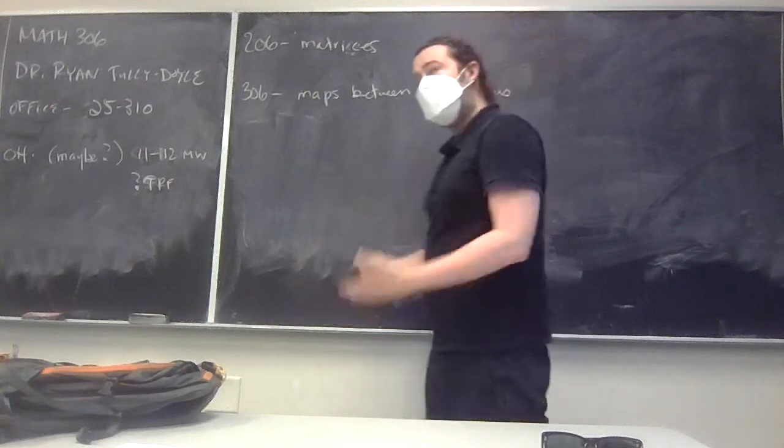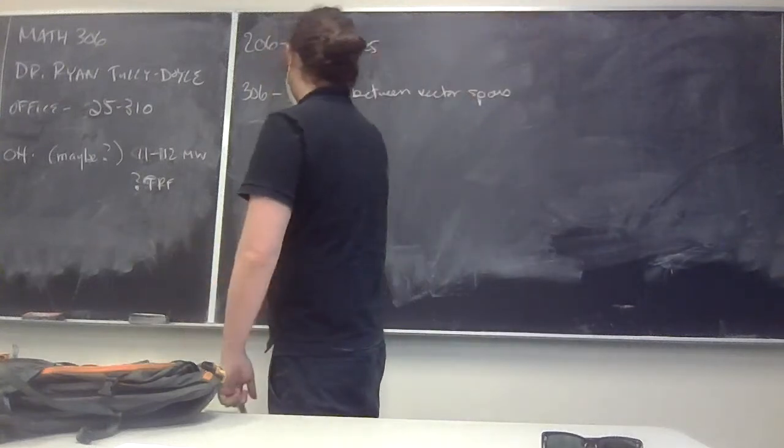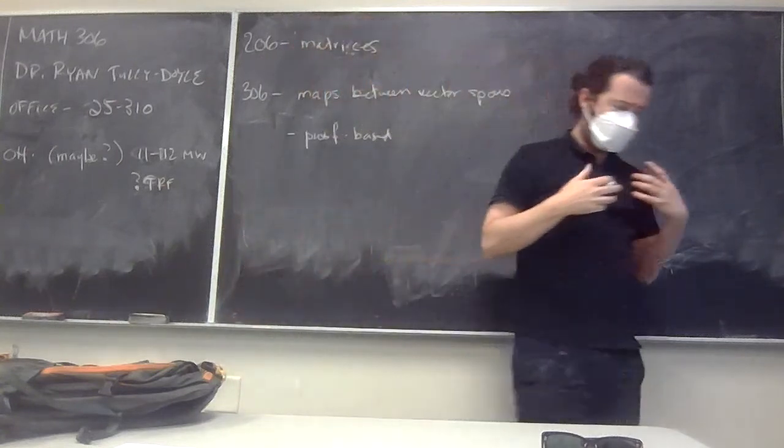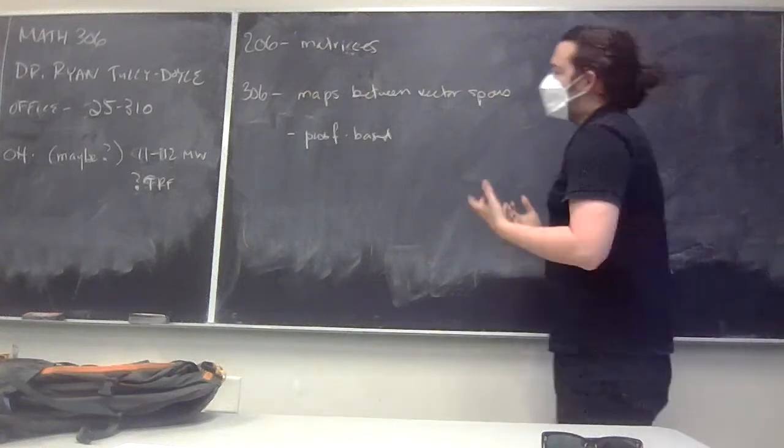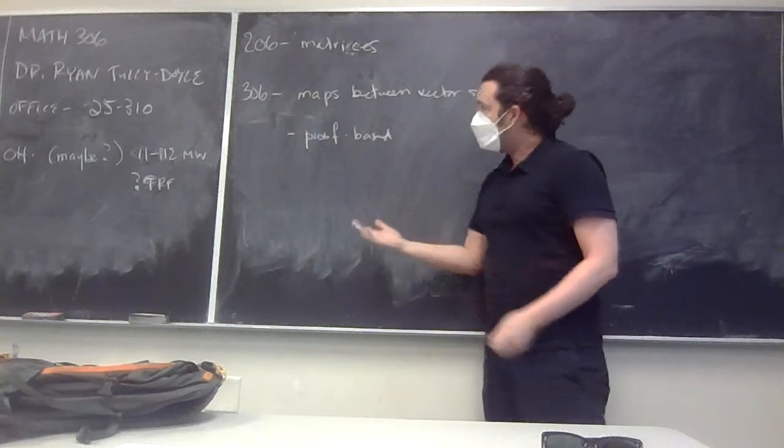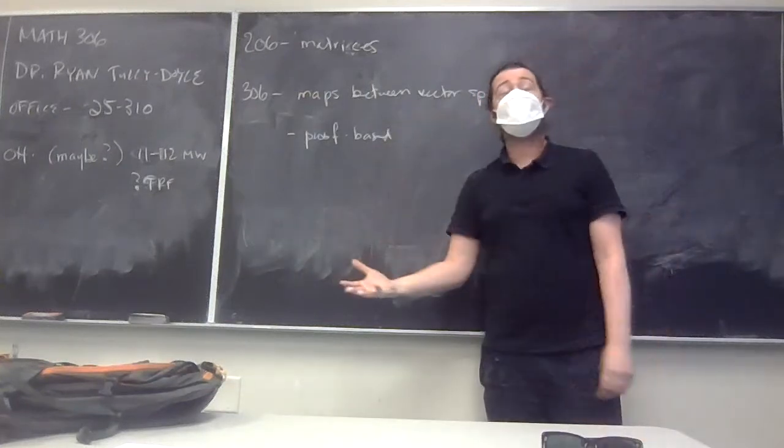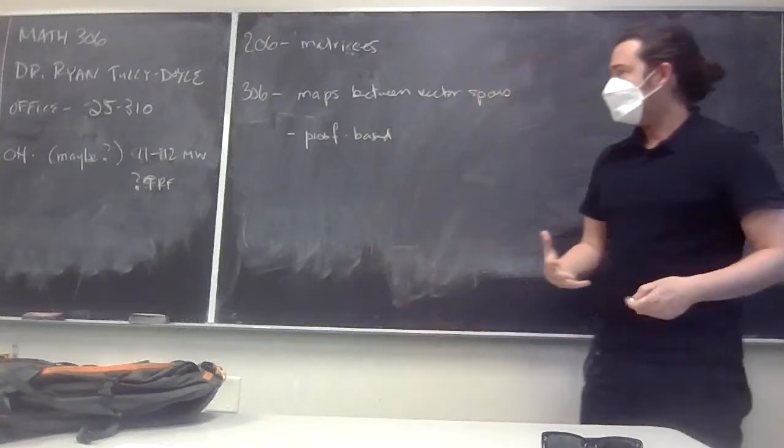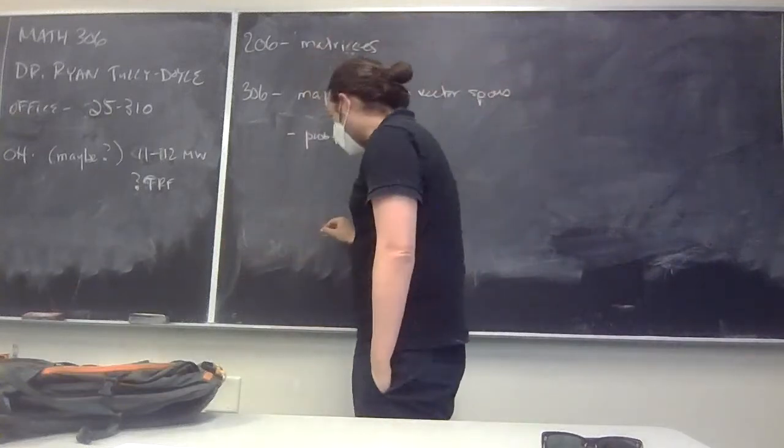In this class we're going to pretend matrices don't exist for chapters. 306 is about maps between vector spaces. The main tools - this is a proof-based class. We're taking a completely different perspective than the 206 text, which is very computational. We're going to be proving that the main ideas of linear algebra work.